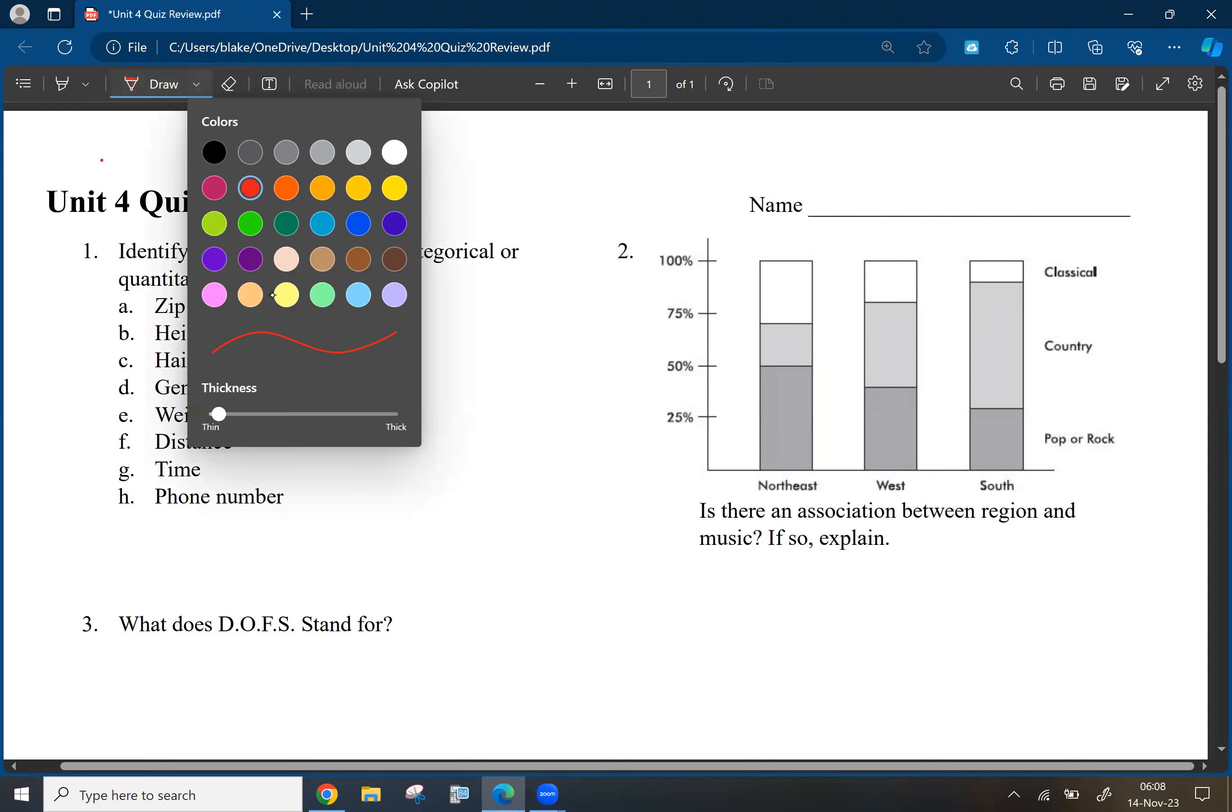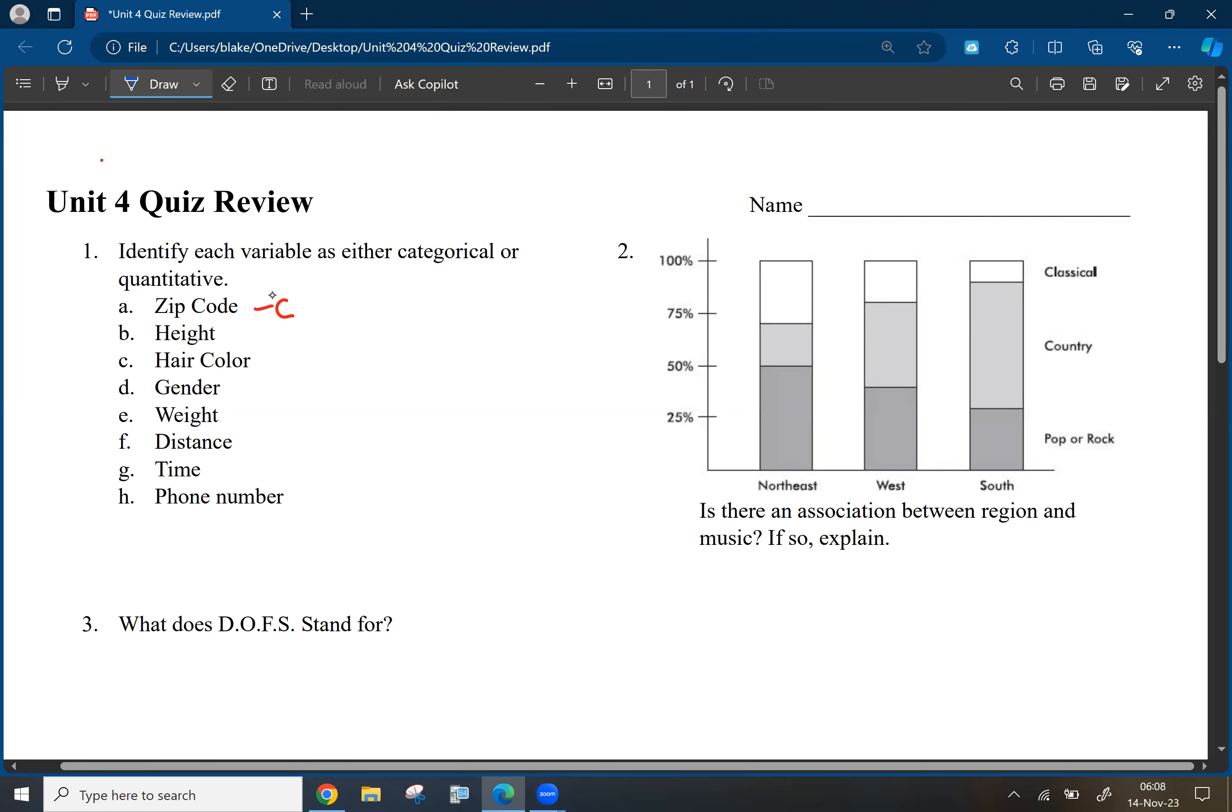Height. Height is measurable. Height is something you can count. You can measure height. So and of course, it's numerical. That's a quantitative thing.